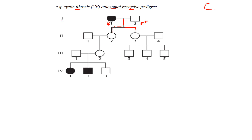The notation is: if you have a capital C, regardless of the other allele, that individual is normal. If you have two little c's, that individual has CF. We use letters because it's autosomal — if it were sex-linked you'd have X's and Y's with superscripts. Because cystic fibrosis is autosomal recessive, the only way to have it is to have two little c's; one capital C means normal.